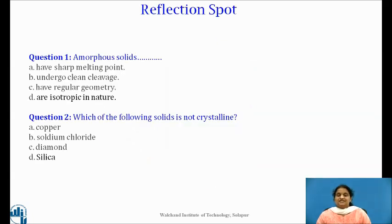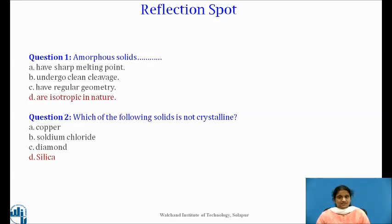Students, now pause the video and try to answer these questions. Let us check your answers. The first one: amorphous solids are isotropic in nature as their properties are independent of direction. The second one: silica is not crystalline.